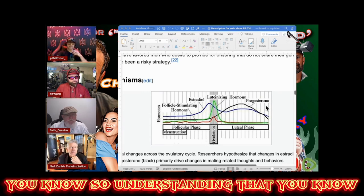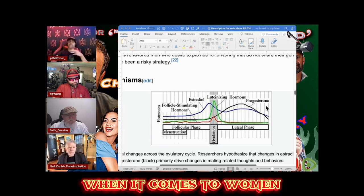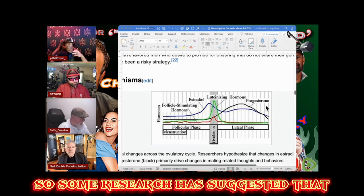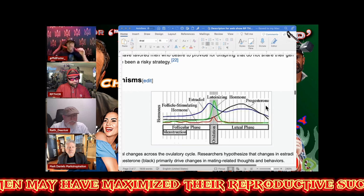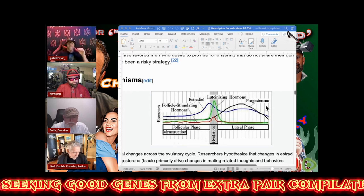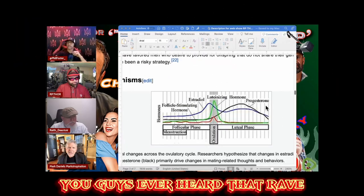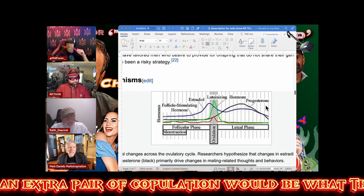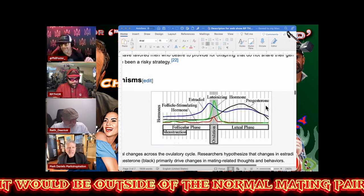Understanding that you're up against a hormonal wall when it comes to women and understanding how they operate is important. Some researchers suggested that over evolutionary time women may have maximized their reproductive success by seeking good genes from extra-pair copulation. Do you guys know what that means? Have you ever heard that?